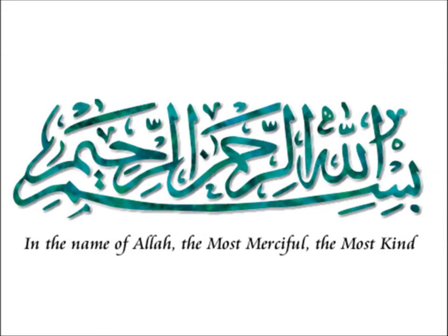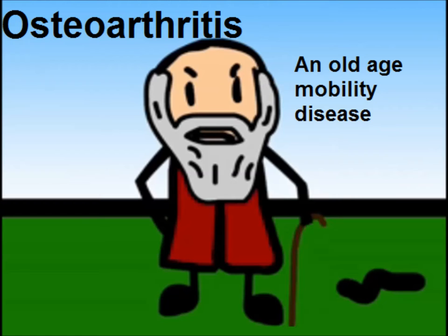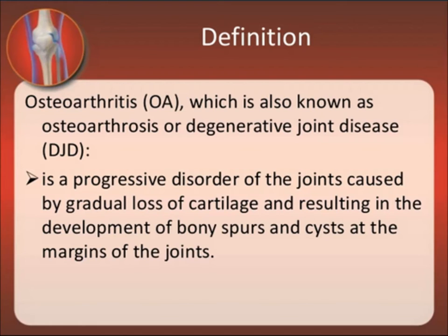Today we are going to discuss osteoarthritis, an old age mobility disease. Osteoarthritis is also called osteoarthrosis or degenerative joint disease. It is a progressive disorder of the joints caused by gradual loss of cartilage, resulting in development of bony spurs and cysts at the margins of the joints. These bony spurs are also called osteophytes.